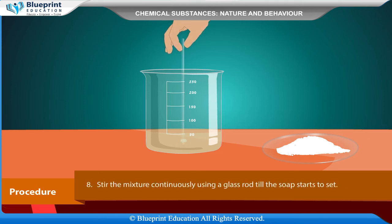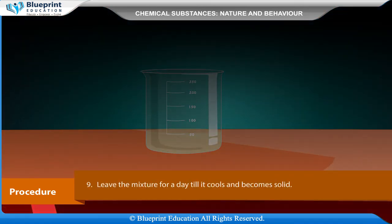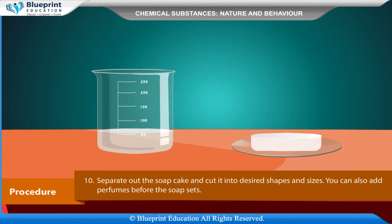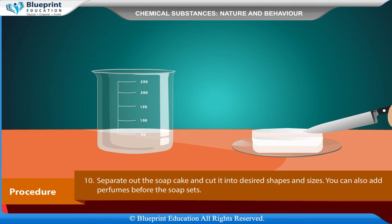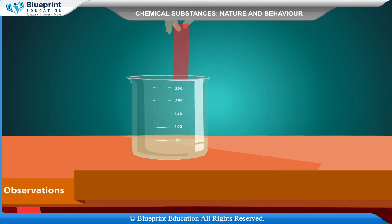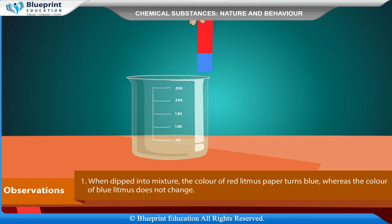Add 5 to 10 grams of common salt to the mixture. Stir the mixture continuously using a glass rod until the soap starts to set. Leave the mixture for a day until it cools and becomes solid. Separate out the soap cake and cut it into desired shapes and sizes. You can also add perfumes before the soap sets.